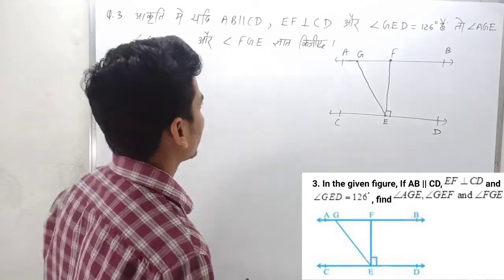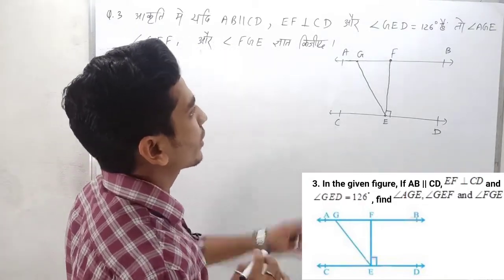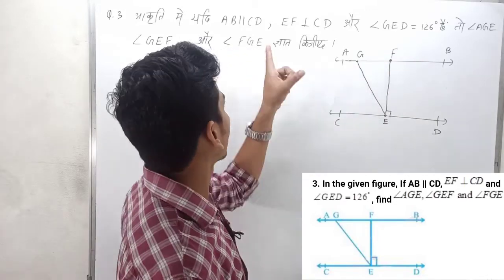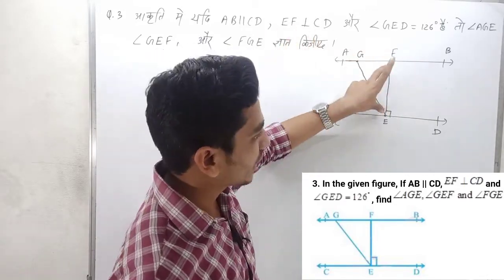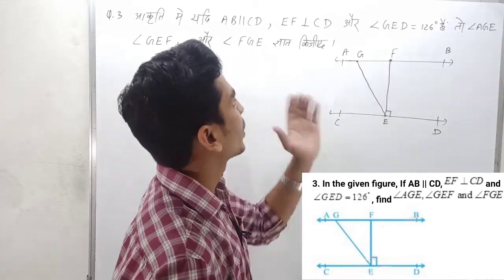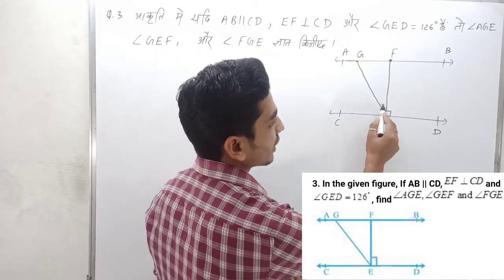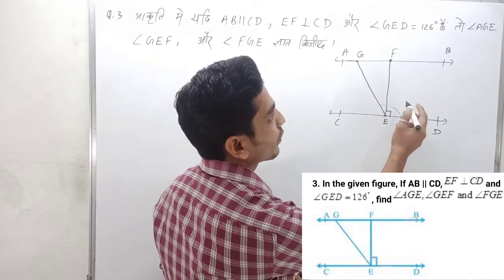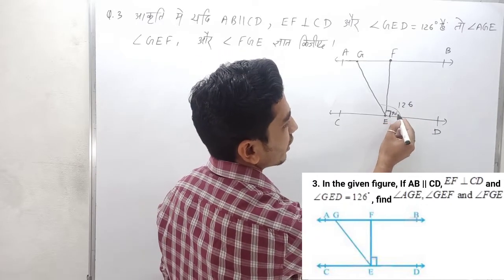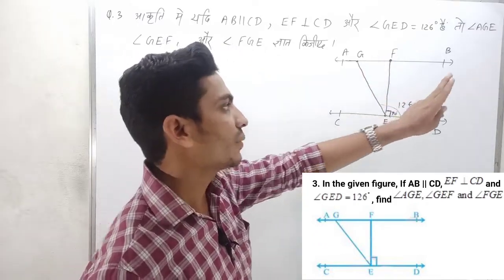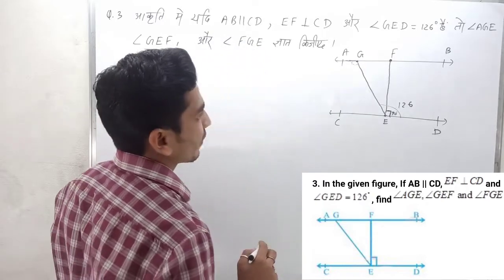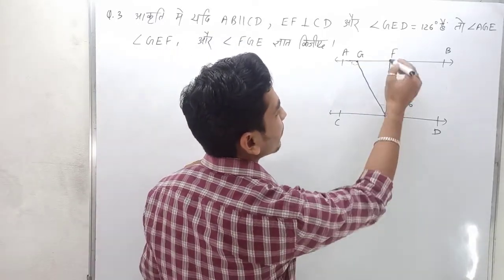Question number 3: AB is parallel to CD, and EF is perpendicular to CD. The angle here is 126 degrees. Find angle AGE, GEF, and ZEF.